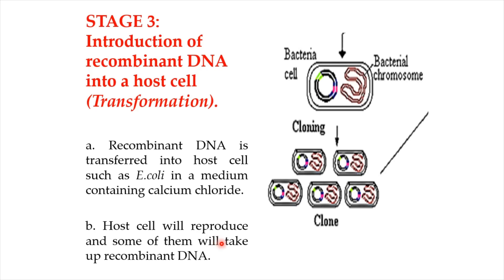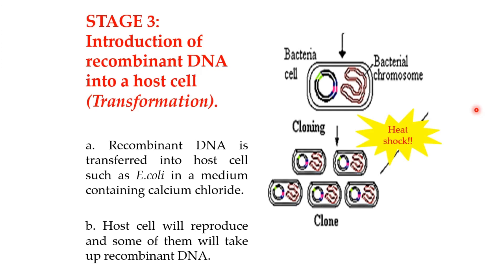The host cells will reproduce, and some of them will take up the recombinant DNA. In order to let the host cells take up the plasmid, the chilled host cells — usually at 4°C — are heated up to 42°C for 45 seconds and then placed back in ice. This is called heat shock. Heat shock makes the membrane of the host cell become more permeable to the plasmid.